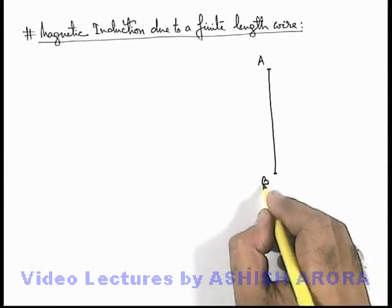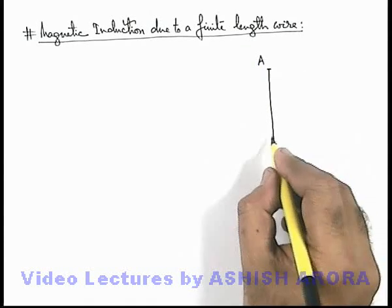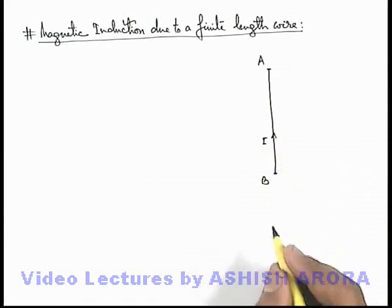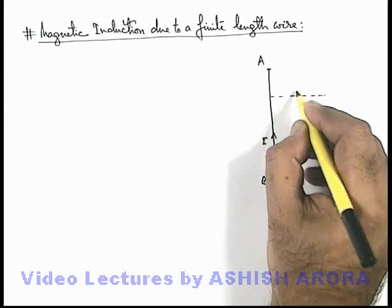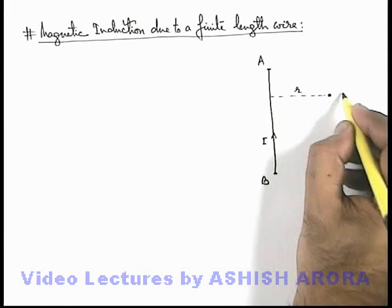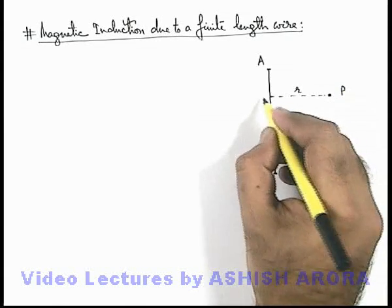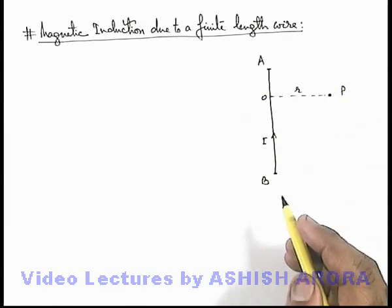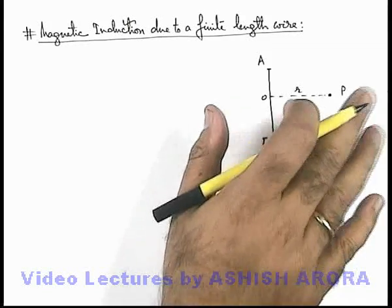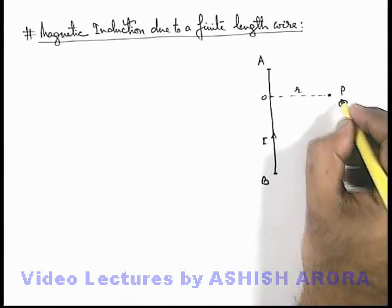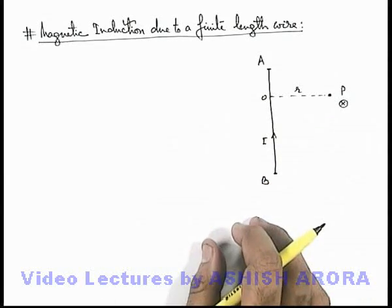Now let's consider there is a finite length wire AB which carries a current i. From this wire AB at a perpendicular distance r, there exists a point P from point O on the wire, and we are required to find the magnetic induction at P. The direction can be directly given in the downward direction because of the right hand thumb rule.